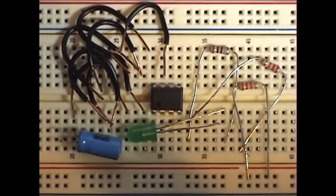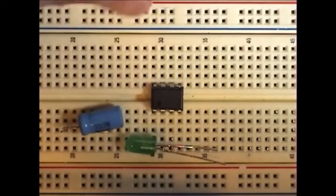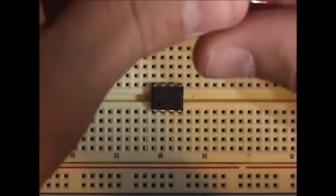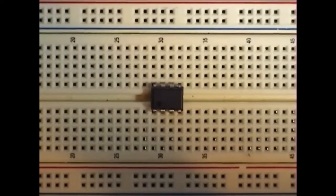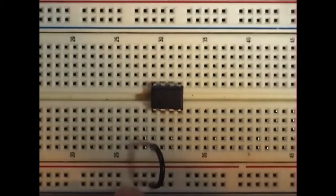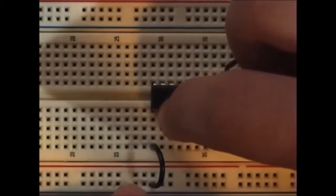Okay, so the first thing you do is connect pin 1 to ground. You can tell which one is pin 1 by that little dot right there.